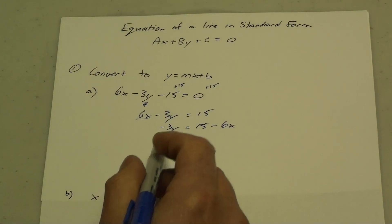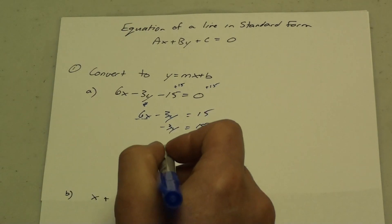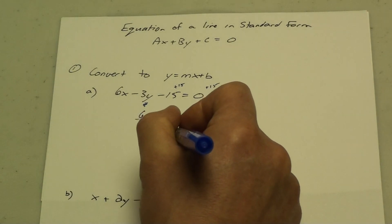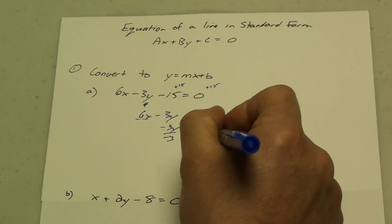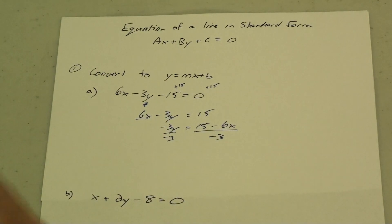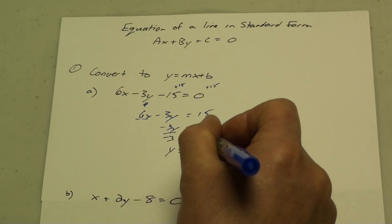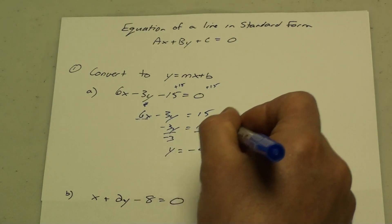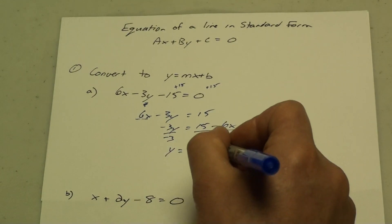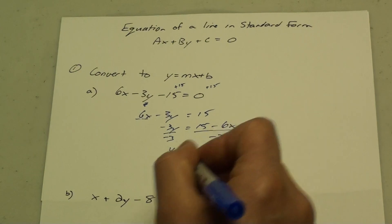Then finally, I want to get the y by itself. This is being multiplied by negative 3, so I'm going to divide everything by negative 3. That leaves me with y, and 15 divided by negative 3 is negative 5. Negative 6x divided by negative 3 is plus 2x.